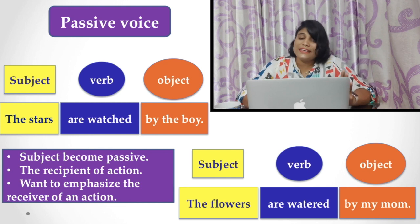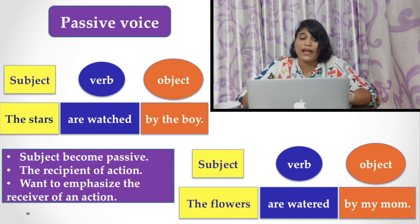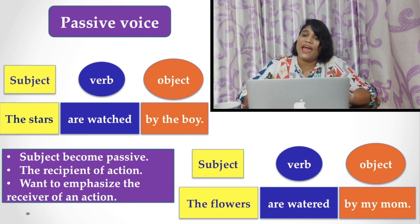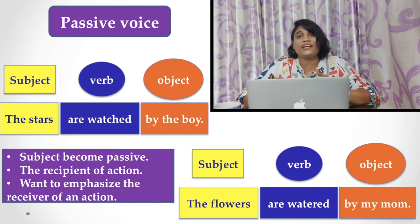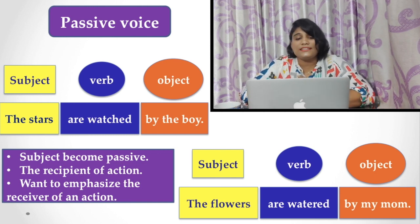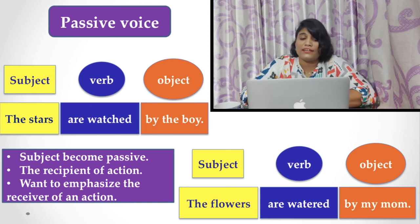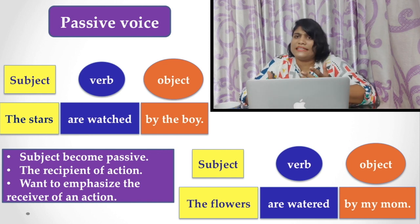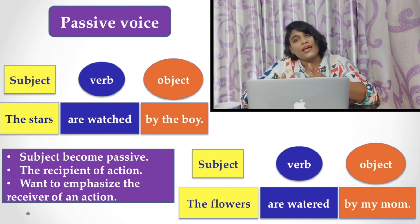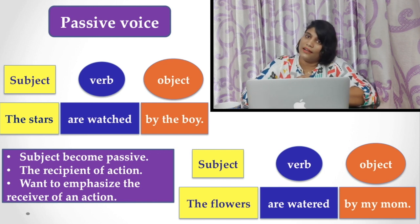If you notice these examples clearly, in passive voice the subject becomes passive and it is the recipient of an action — it becomes the object of the verb. Why do we use passive voice? It is when we try to emphasize the action or the receiver of the action, or when we intend not to tell clearly who did the action. Then, in an indirect way, we use passive voice in the English language.